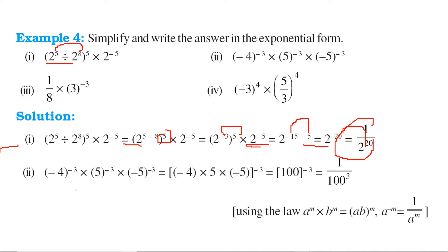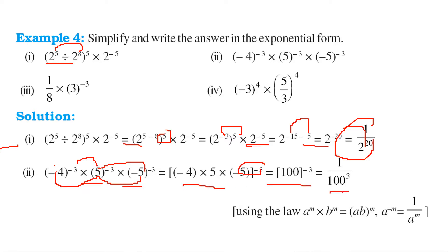Now, minus 4 to the power minus 3 times 5 to the power minus 3 times minus 5 to the power minus 3 — the powers are same but bases are different, so we multiply the bases: minus 4 into 5 into minus 5 to the power minus 3. This gives 100 to the power minus 3, which is 1 by 100 to the power 3. We use the rule: a to the power m into b to the power m equals ab to the power m. Anything with a negative power can be moved to the denominator with the power as positive.